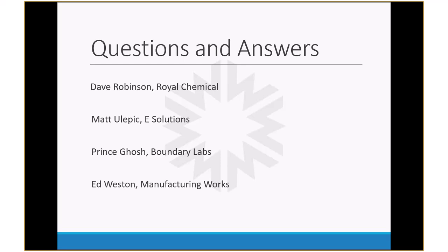Prince Ghosh said the most exciting part for him is the unexpected outcomes that pop up when implementing these solutions. Everyone goes in thinking there's one specific problem to solve, but inadvertently you end up solving that problem and discovering other benefits. His favorite example is the case where they were looking to predict tool life failure and ended up being able to reallocate overall labor — getting an extra 30 minutes back in production value every day. It's those unintended consequences that spring up from remote solutions that really excite him.